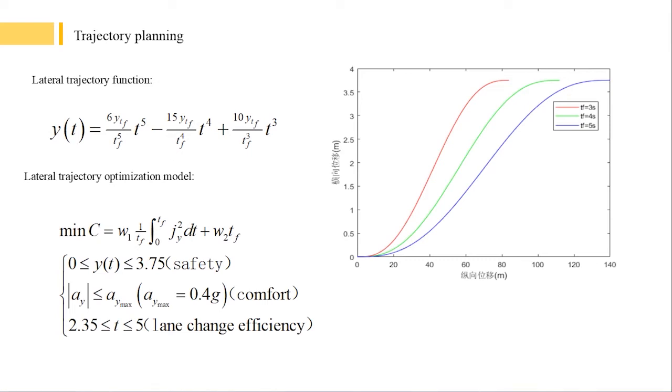In this paper, combining the lateral boundary conditions and comfort requirements, it is concluded that the lane change duration should be greater than 2.35 seconds, establishing a lateral trajectory optimization model with the lane change duration as a variable and safety.